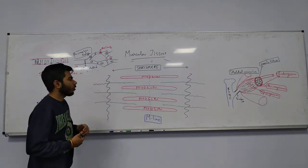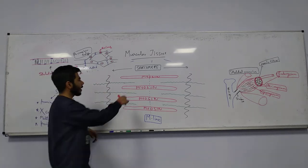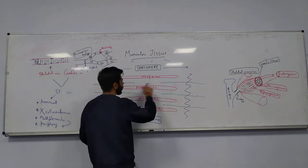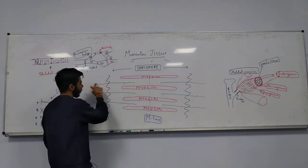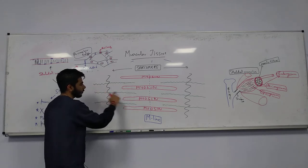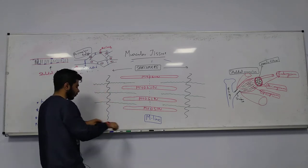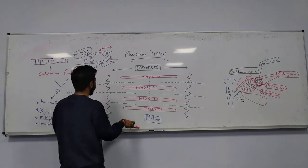We were talking about the sarcomere. This is the myosin filament and this is the actin filament, with the green ones — so this is the actin.